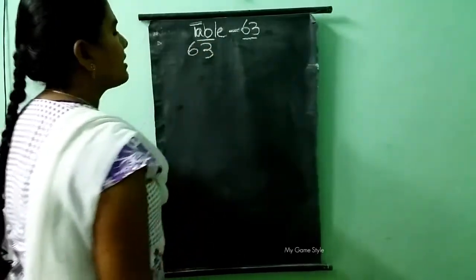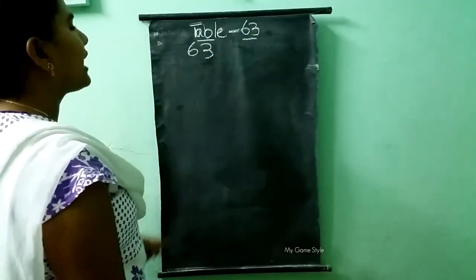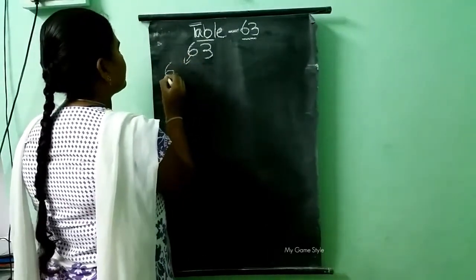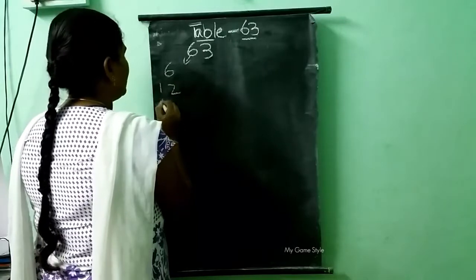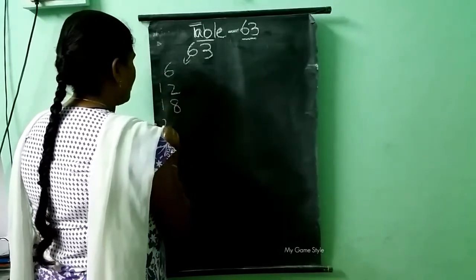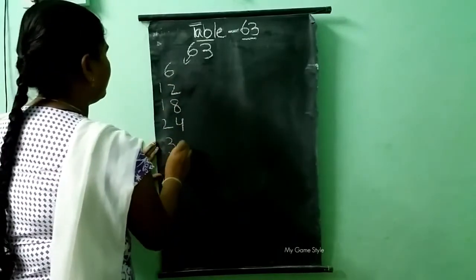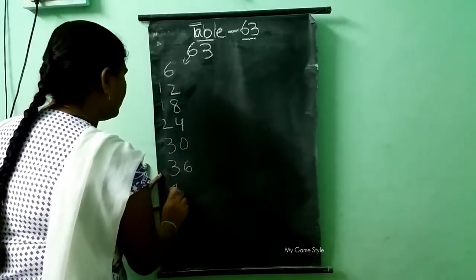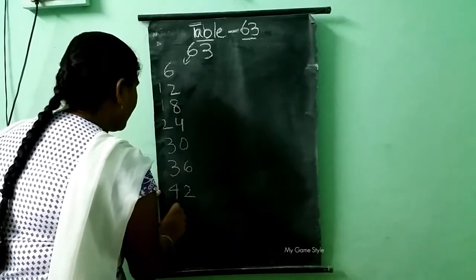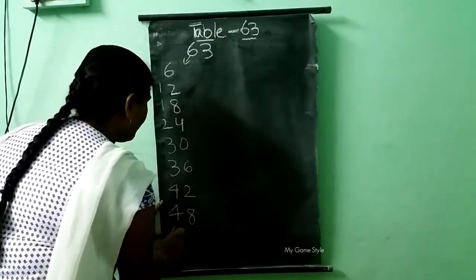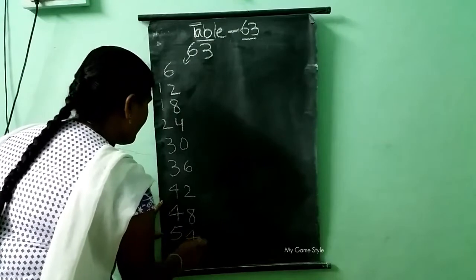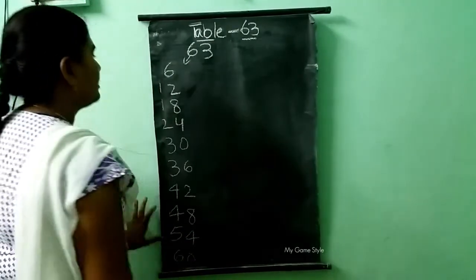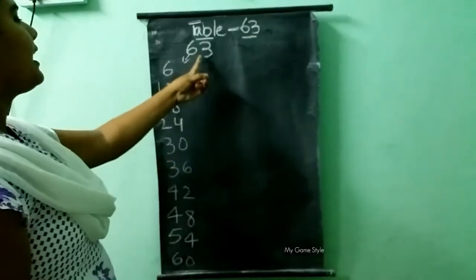63 — here 6 is there and 3 is there. So we need to write the 6 times table first, children: 6, 12, 18, 24, 30, 36, 42, 48, 54, 60. This is the 6 table.